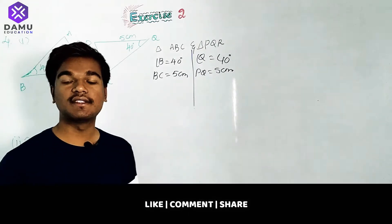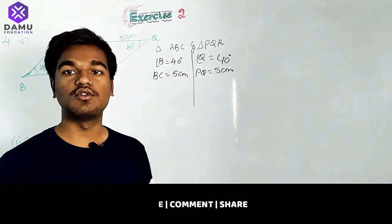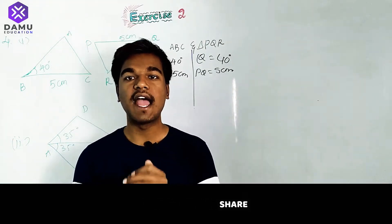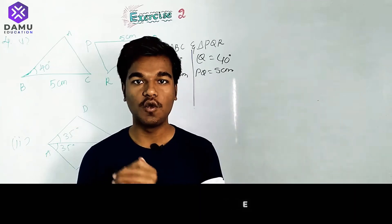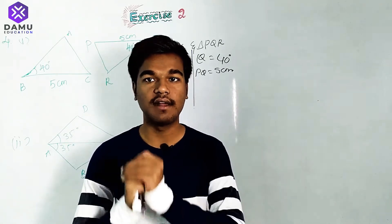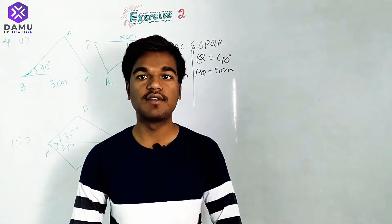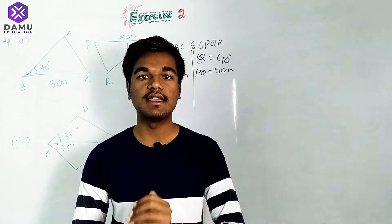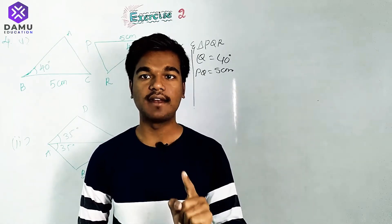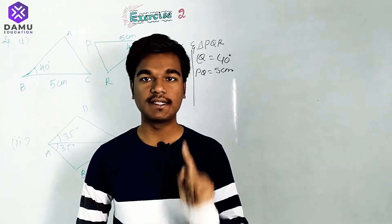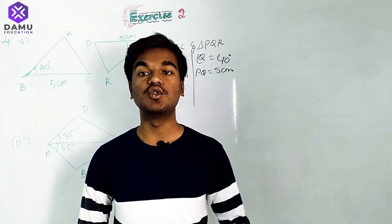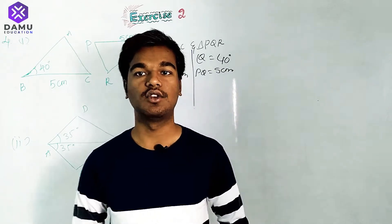To satisfy the SAS congruency rule, we have to start with a known side, then go to the known angle, then go to another known side. It should follow the pattern: side, angle, side.